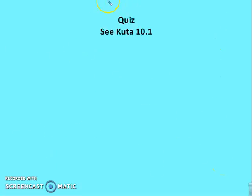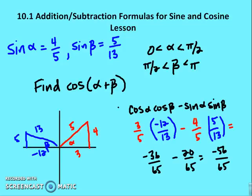That's it for section 10.1, addition and subtraction formulas for sine and cosine. Please join us in the next edition when we talk about addition and subtraction formulas for tangent.